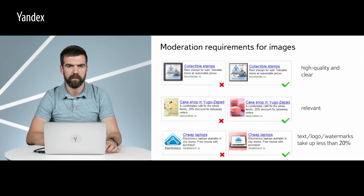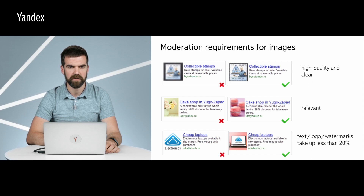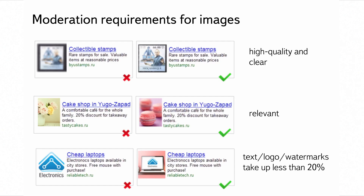Let's remember the requirements for ad images. Images must be high quality, clear, relevant, and meet both legal and Yandex's requirements. Text, logos, and watermarks should take up no more than 20% of the entire image, except text that appears on the product's packaging or a screenshot of a game or app. In addition, images must not contain elements of the interface that could confuse the user, products or other attributes of the advertiser's competitors, or monochromatic fill or empty spaces larger than 20% of the whole image.